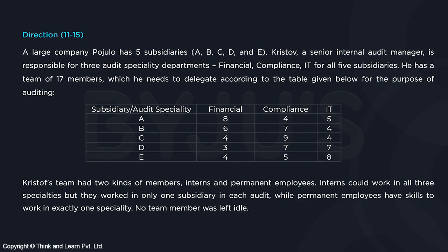Question number 11 to 15. A large company, Polo, has five subsidiaries: A, B, C, D and E.